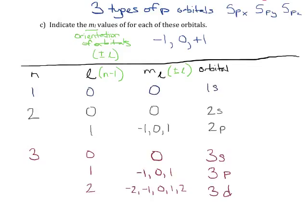For the first energy level, I only have one sub-shell. For the second energy level, I have two sub-shells. For the third energy level, I have three sub-shells.